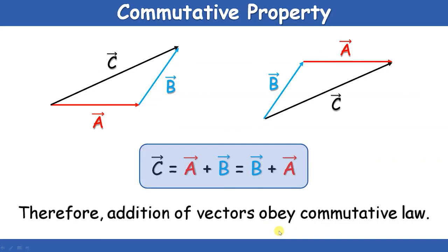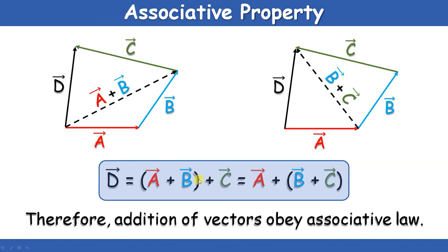Now, the commutative property. In case of vector addition, the commutative law holds good — that is to say, if you add vector A to vector B, that is equal to the addition of vector B to vector A: A plus B equals B plus A. Similarly, the associative property: A plus B in the bracket plus C is equal to A plus B plus C. That is, if you add the first two vectors and add their resultant to C, or add the next two and add their resultant to A, both give the same result. This is the associative law of vector addition.